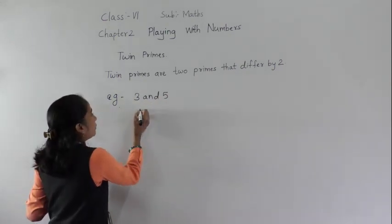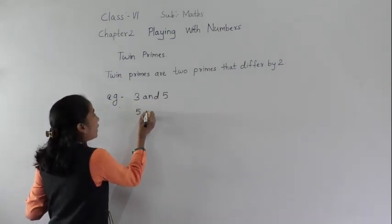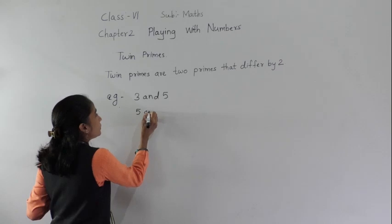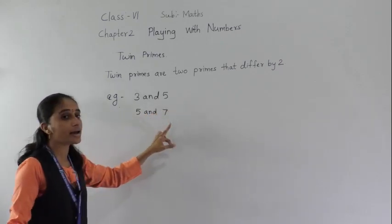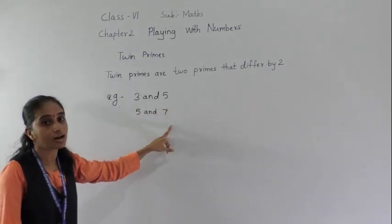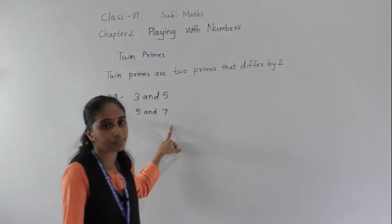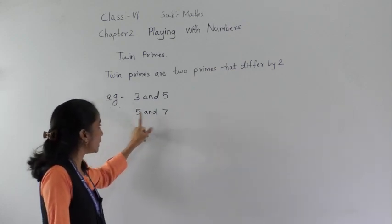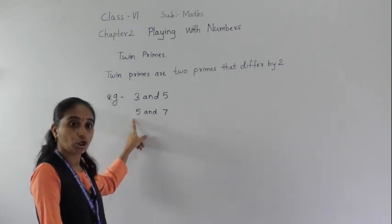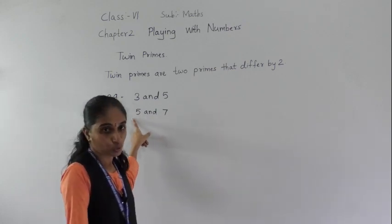Then five and seven. Five and seven are also twin primes because they differ by two. Seven minus five equals two.